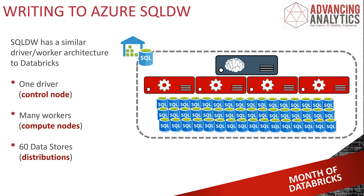When we're scaling SQL Data Warehouse up and down, we simply change the number of compute nodes and that gives us our scale. We also have this idea of distributions, which are our relational data stores — that's what stores the actual data in the warehouse. There are always 60 distributions, but that doesn't actually affect how we get data into it. All we care about is that control node and the worker node.